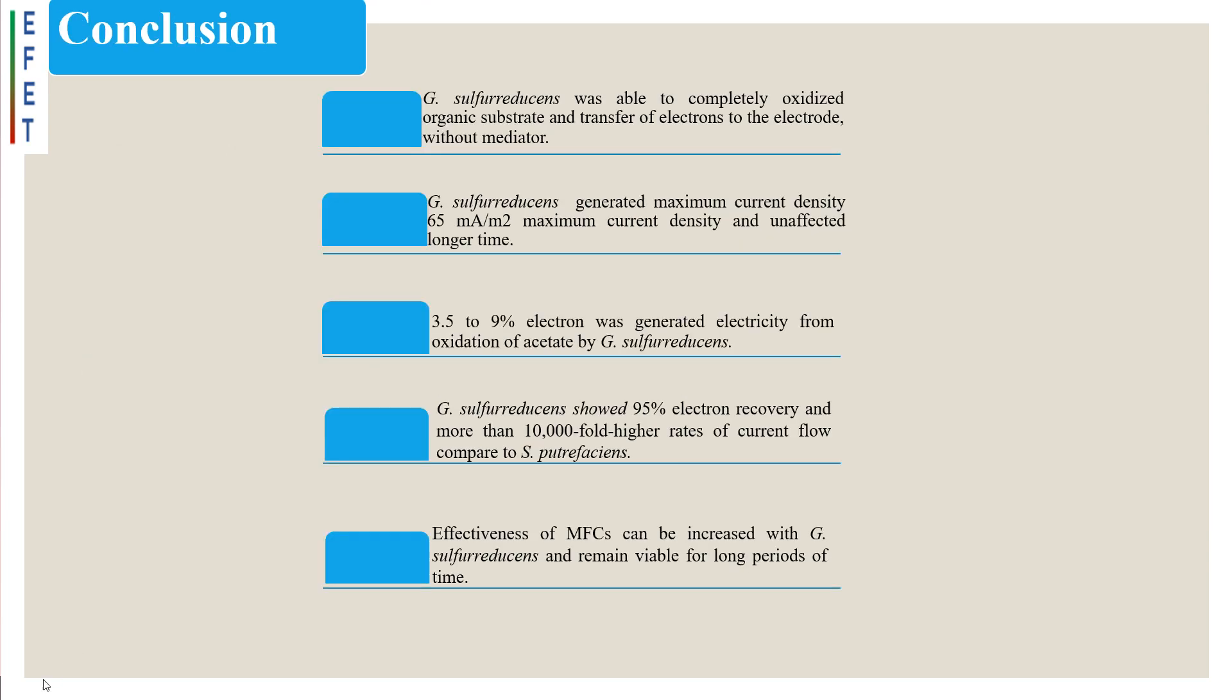Conclusion: From the above discussion, it can be concluded that Geobacter sulfereducens was able to completely oxidize its organic substrate with nearly quantitative transfer of electrons to the electrode without mediator. Geobacter sulfereducens generated maximum current density of 65 mA per square meter and remained unaffected for longer time.